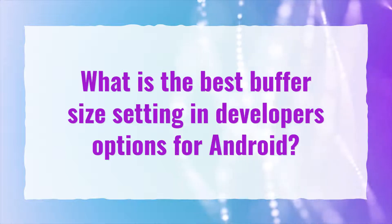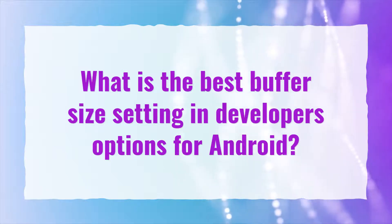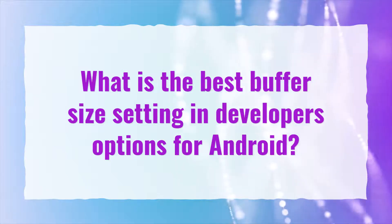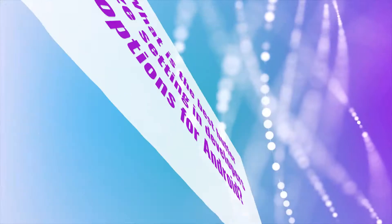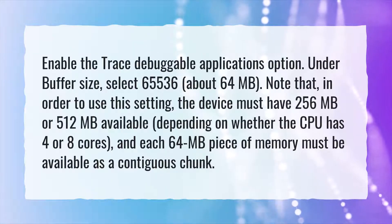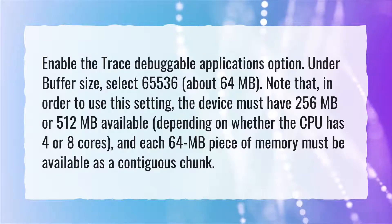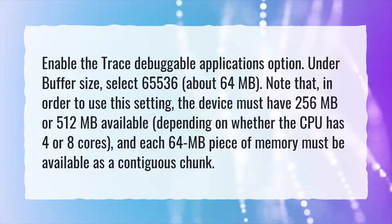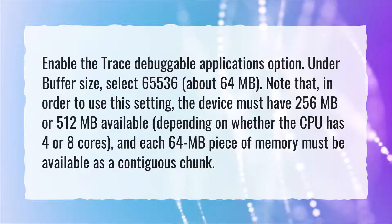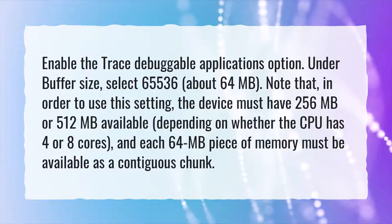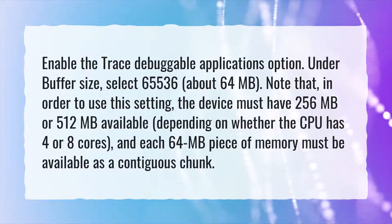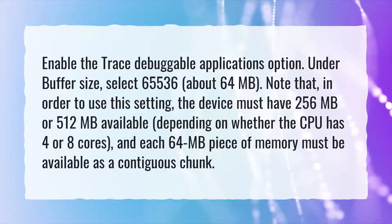What is the best buffer size setting in developer options for Android? Enable the Trace Debuggable Applications option. Under Buffer Size, select 65536, about 64 megabytes.